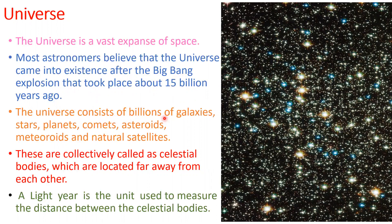The Universe consists of millions of galaxies, stars, planets, comets, asteroids, and natural satellites. These are collectively called celestial bodies, which are located far away from each other, and these celestial bodies are also known as heavenly bodies. A light year is the unit used to measure the distance between the celestial bodies.